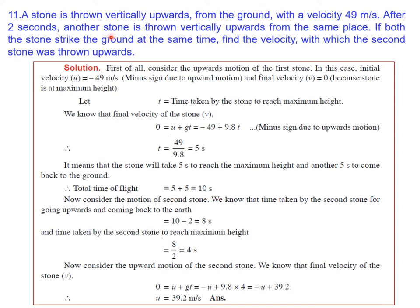The second stone is thrown 2 seconds after the first, so its total time of flight = 10 − 2 = 8 seconds. Time to reach maximum height = 8/2 = 4 seconds. At maximum height, v = 0. Using v = −u + gt, with v = 0 and t = 4 s, we get the velocity of the second stone as 39.2 m/s.